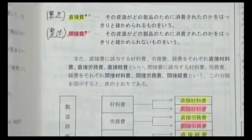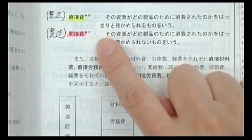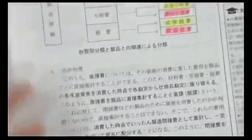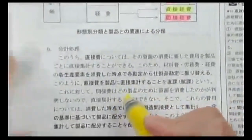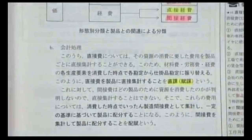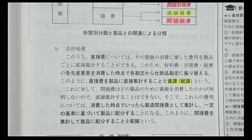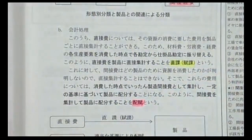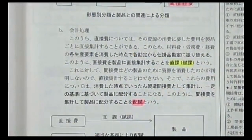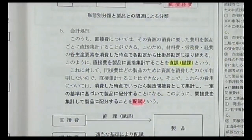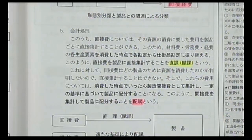直接費と間接費では原価計算の手続きが異なります。直接費は製品に対して直接集計できるので「直課」または「賦課」という手続きを取ります。間接費は各製品にいくらかかったか分からないので「配賦」という手続きで各製品に負担させます。